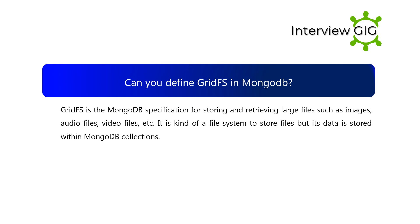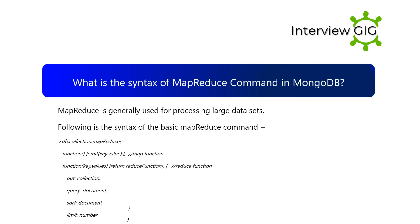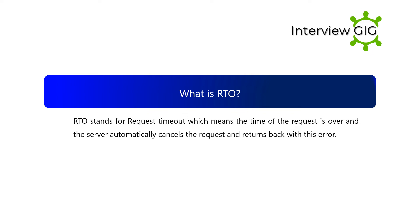Can you define GridFS in MongoDB? GridFS is the MongoDB specification for storing and retrieving large files such as images, audio files, and video files. It is a kind of file system to store files, but its data is stored within MongoDB collections. What is the syntax of the map-reduce command in MongoDB? Map-reduce is generally used for processing large data sets. What is RTO? RTO stands for Request Timeout, which means the time of the request is over and the server automatically cancels the request and returns an error.